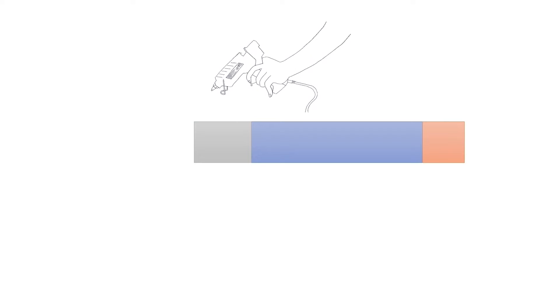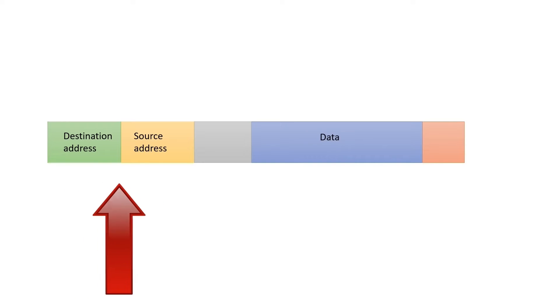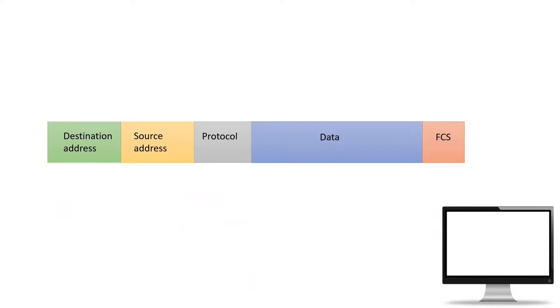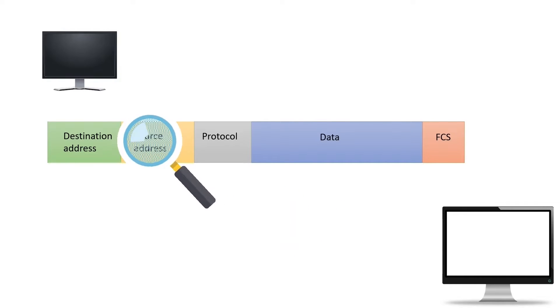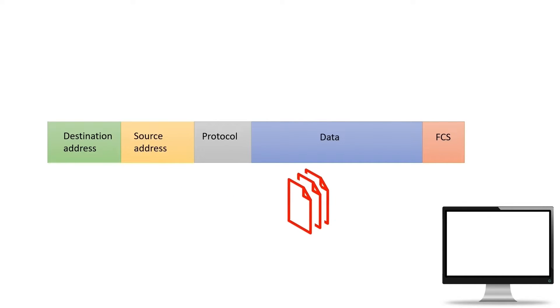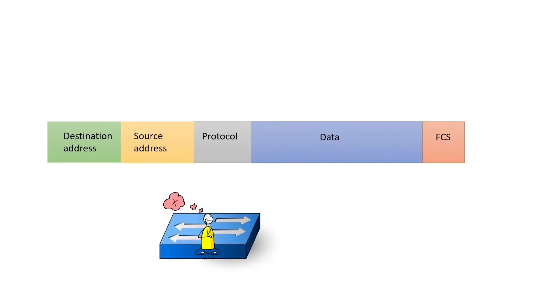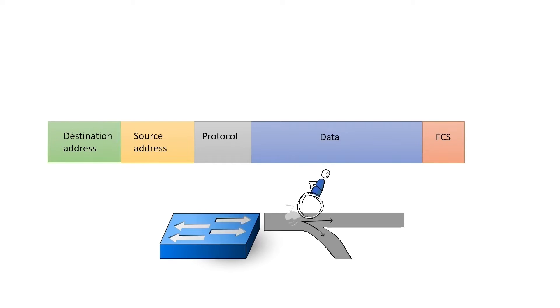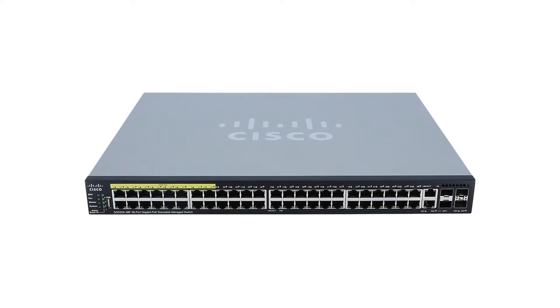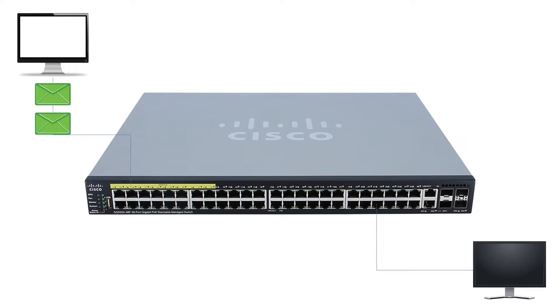After segmentation, the device attaches necessary information to each data piece, including the source address, destination address, and other protocol-specific information. The destination device uses this information to identify the source and reassemble the original data stream by assembling all frames. The intermediate devices use this information to make forwarding decisions. A switch is an intermediate device — it forwards an incoming frame only from the port connected to the destination device.